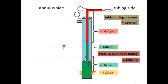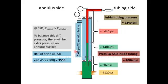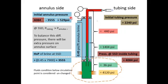Now let's look at the annulus. The annulus contains only one fluid — 0.45 psi/ft completion brine — which provides 3,555 psi of hydrostatic pressure from surface all the way to the SSD. If we open the SSD we need to equalize the pressure. The pressure at the SSD outside the tubing must match 4,084 psi inside, so we need to apply an extra 529 psi at the surface of the annulus.